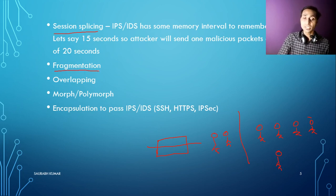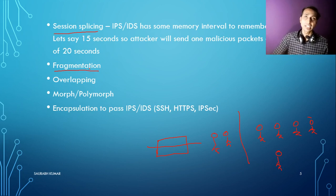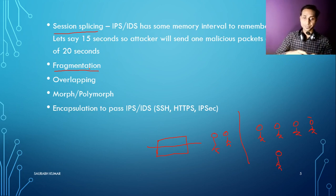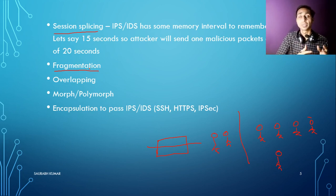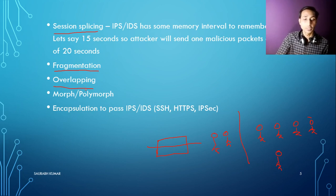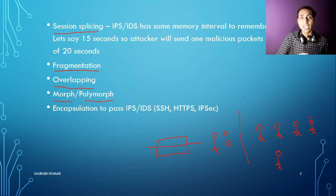There is also fragmentation - mixing malicious content with other content, keeping parts of the malware in different places, sending them separately, and then having them defragment and reassemble at the destination to become malicious content again. Then there is overlapping - overlapping with other content or requests. Additionally, attackers can use morphing or polymorphism. These are some methods used by attackers or hackers to bypass IDS and IPS devices.